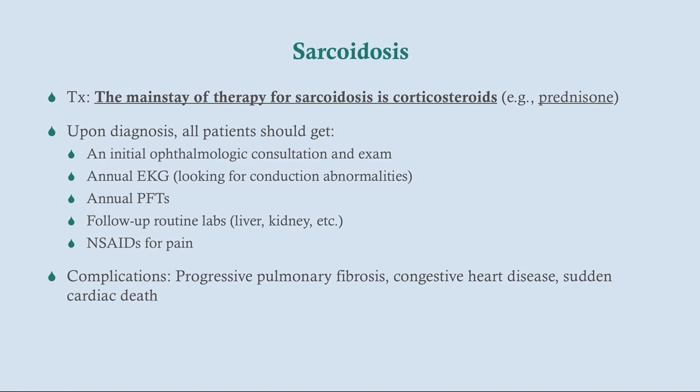The mainstay of treatment for sarcoidosis is corticosteroids such as prednisone, though steroid-sparing agents may also be used. On diagnosis, all patients should receive an ophthalmologic exam given the risk of uveitis, an EKG given the risk of conduction defects from cardiac granulomas, and pulmonary function tests. Routine labs and NSAIDs for pain are also recommended. Complications include progressive pulmonary fibrosis, cor pulmonale leading to congestive heart failure, and sudden cardiac death from arrhythmias.